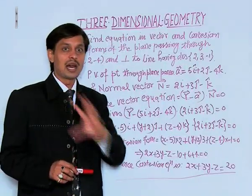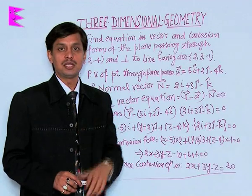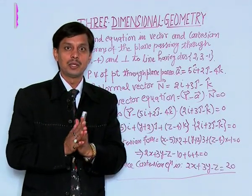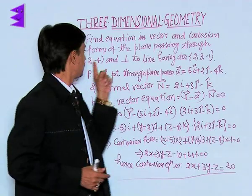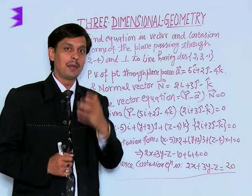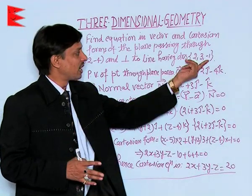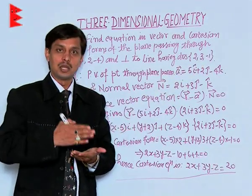So we have two things: A) the coordinates of that point through which the plane is passing, that is (5, 2, -4), and B) the direction ratios of the normal. So ultimately, first we will find the vector form and then we will convert that vector form into Cartesian form.